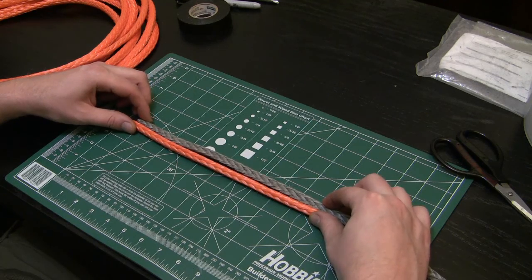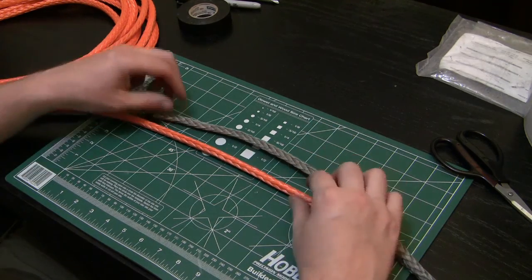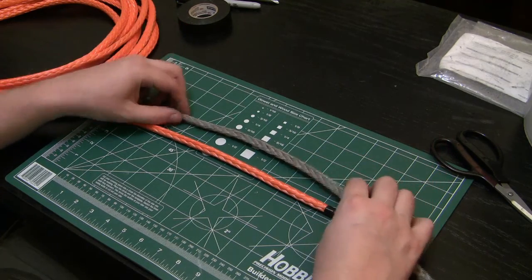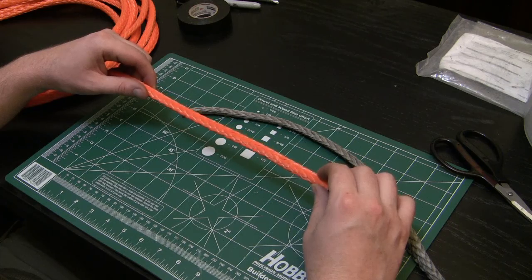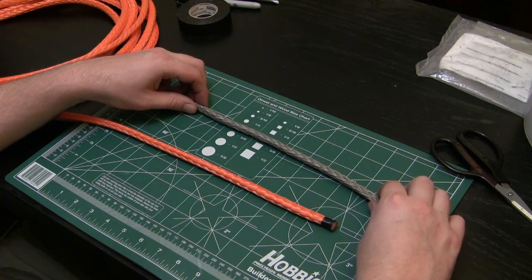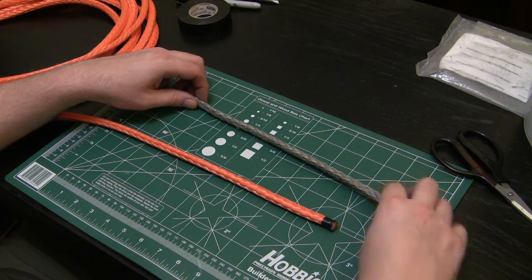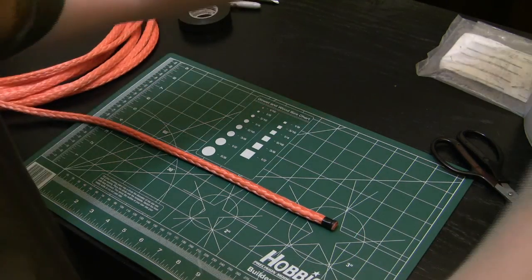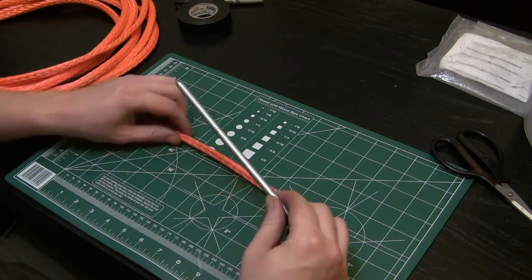Basically what we're doing is we're going to join these two ropes together. To do that, we're going to do the same thing but we're going to do it twice. I'm just going to demonstrate it on this orange rope, and when you're finished you'll need to do the same thing to your other rope.